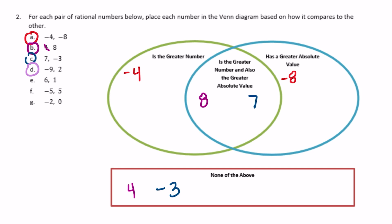Part D: negative 9 and 2. The greater number is 2. Which has the greater absolute value? That would be negative 9, because the absolute value of negative 9 is 9, which is greater than 2. Then 6 and 1 — the greater number is 6, and 6 also has the greater absolute value, so it goes in the middle, and we did not use 1, so it goes down there.